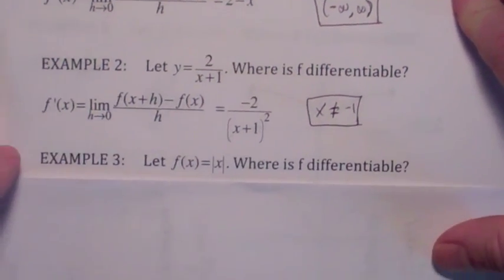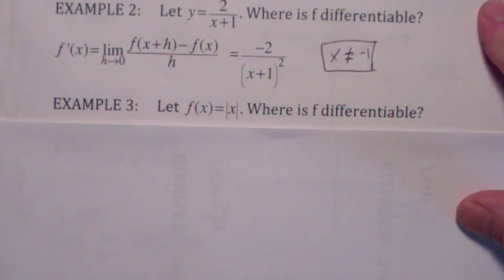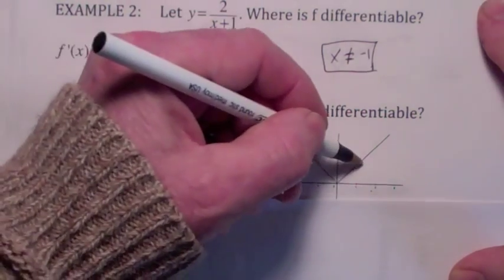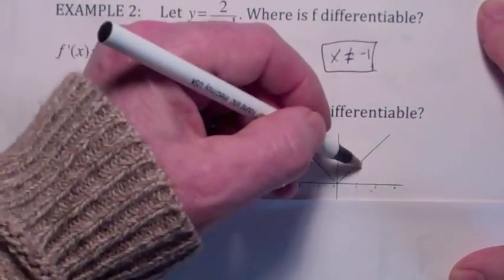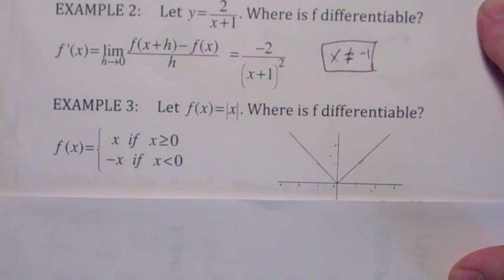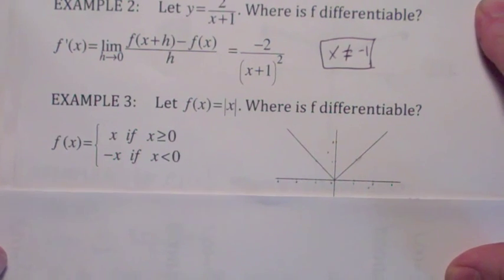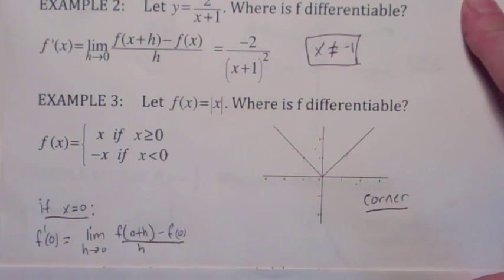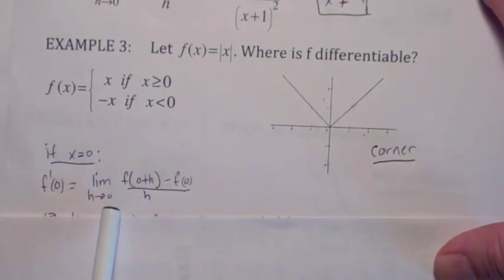Here's when we started looking at the absolute value function in part one. The graph looks like this, and we ask the question where is this function differentiable? If x is a positive number, the derivative exists — in fact, it's 1. And if x is any negative number, the derivative also exists; in that case, it's negative 1. The issue is really what happens at 0. And f'(0) is this limit — the limit of the difference quotient.